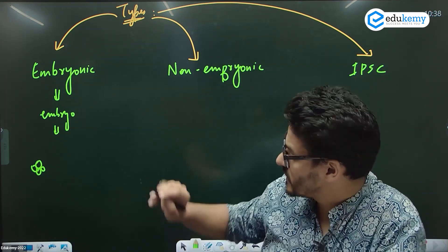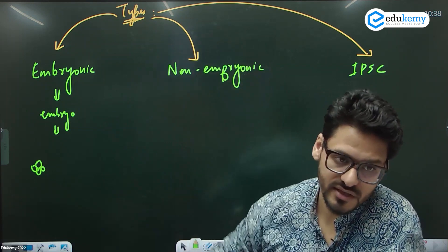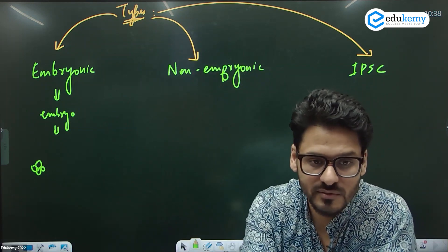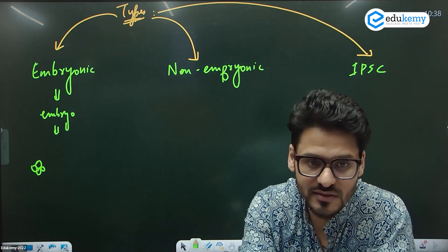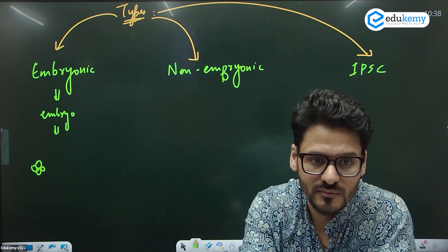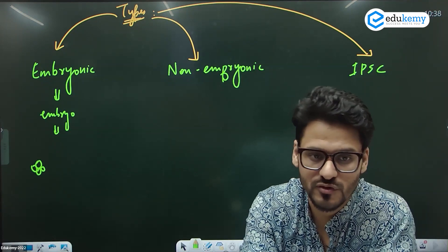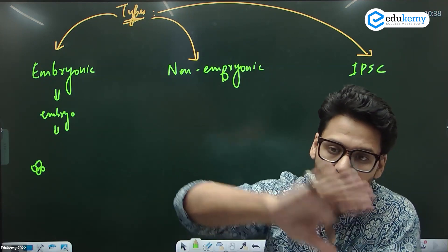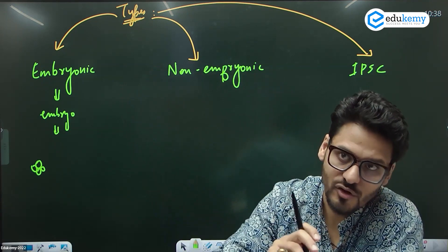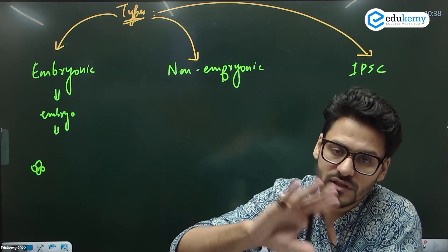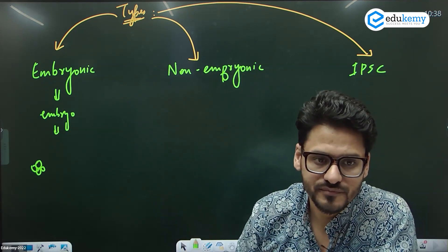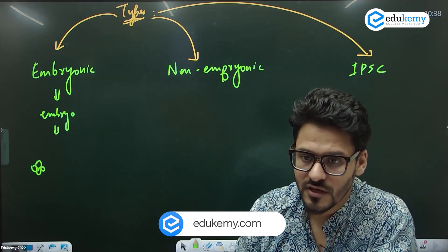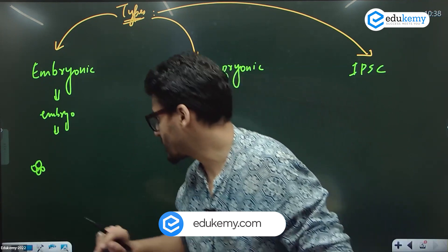From these embryonic stem cells, the entire body is created — the heart, kidney, eyes, hair, legs, everything. So it is these cells that create all the organs and all other cell types. All other cell types are created from embryonic stem cells.